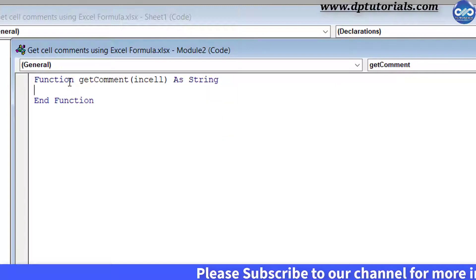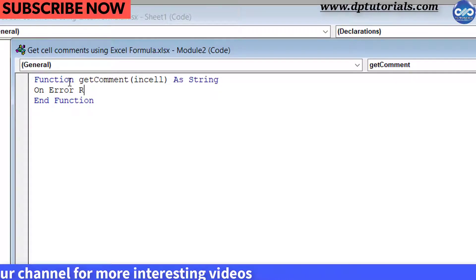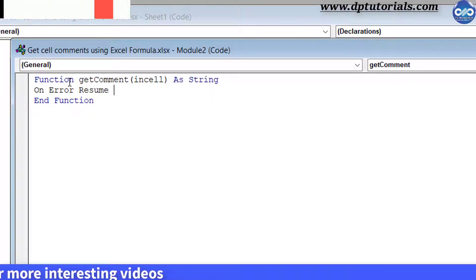Type getComment equals inCell dot comment dot text. Press enter and end function.